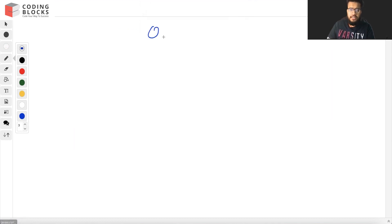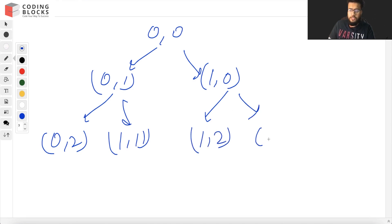Initially we are at (0,0). From (0,0) we can either move to (0,1) or (1,0). From (0,1) we can either move to (0,2) or (1,1). From (1,0) we can either move to (1,2) or (1,1). So likewise the recursive tree will go. What we'll do is we'll just add the answer that will be given to us by these two recursion branches.